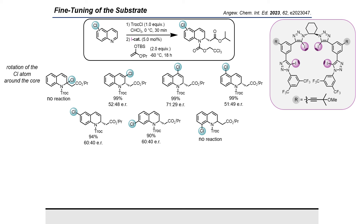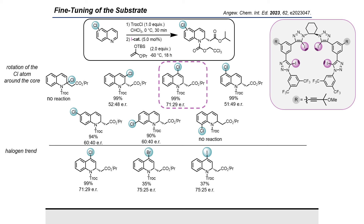We started our investigations by letting a chlorine atom rotate around the quinoline core. With the chlorine in the four position, we were able to achieve increased enantioselectivity. Compared with the heavier halogens, we could see slightly better enantiomeric ratios, but unfortunately the yield dropped a lot.